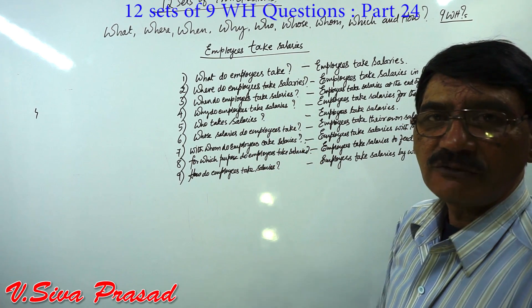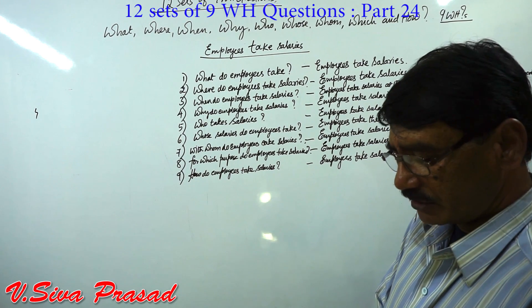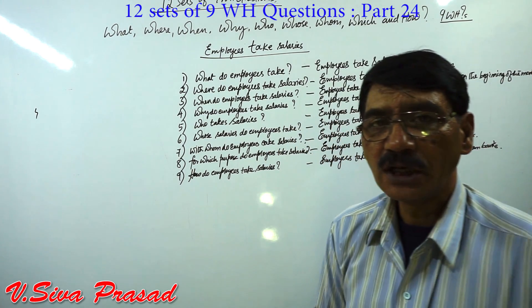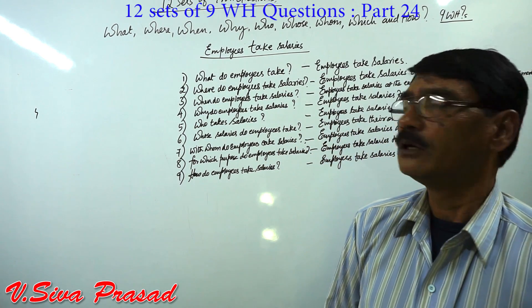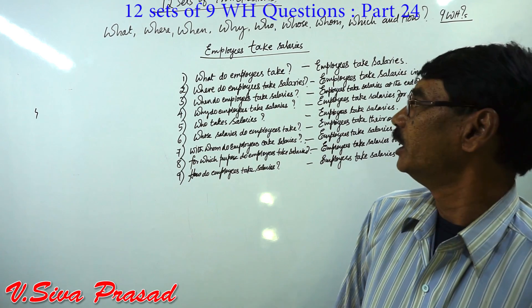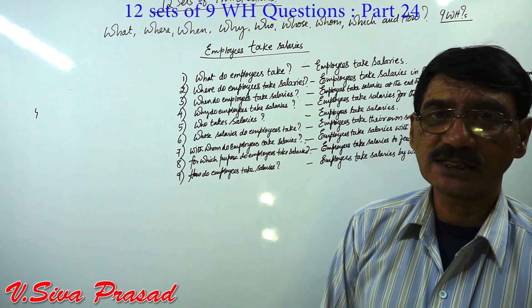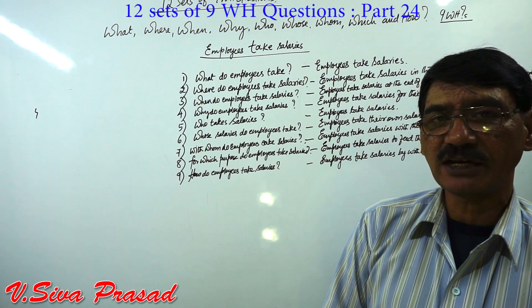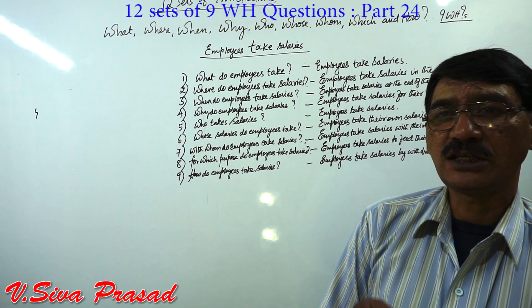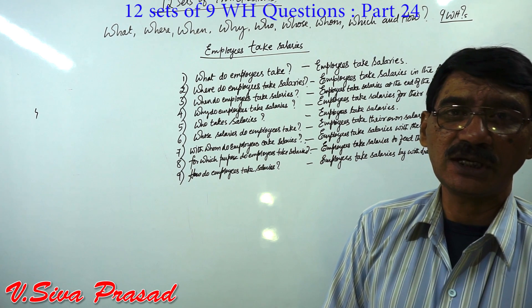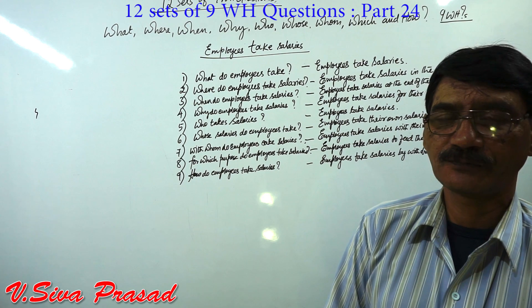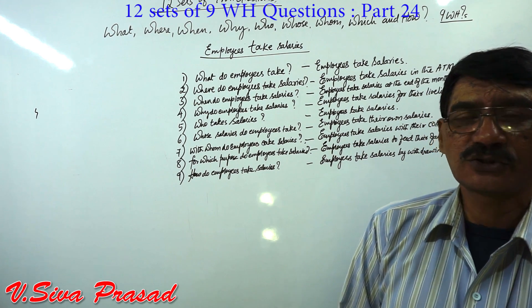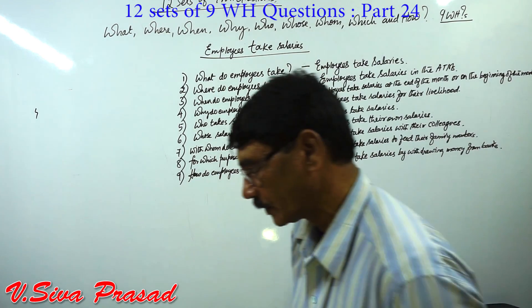We already have one set and we are going to change it into 12 sets. I will read this set once again for you — please listen carefully. You will be learning how to form sentences, how to ask WH questions, you will be building your vocabulary, learning how to use the neutral accent, and how to pronounce words correctly. There is so much to gain in doing this practice. I wish you all the best. Now let us start.